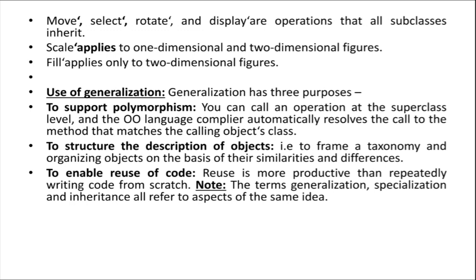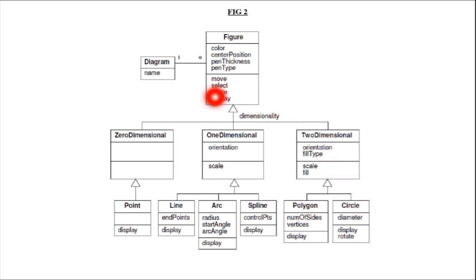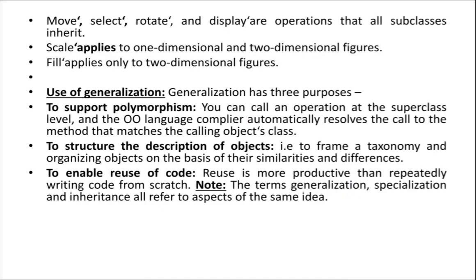What is the main advantage of generalization? Generalization has three main purposes. First, to support polymorphism. Polymorphism means one feature can be used in different forms. For example, the display operation is defined once in the figure superclass, and the same display operation is used by all the subclasses. That is polymorphism — one thing, many forms.